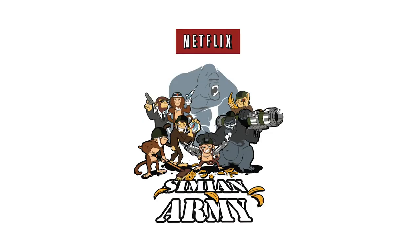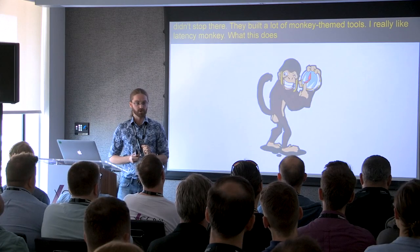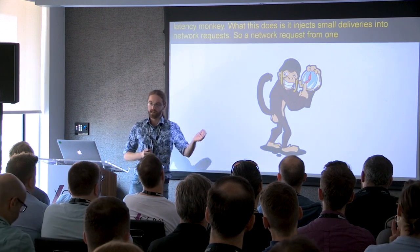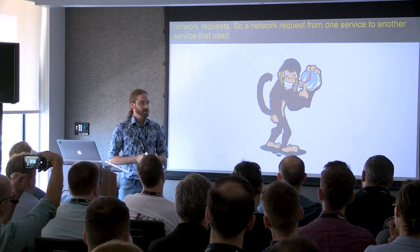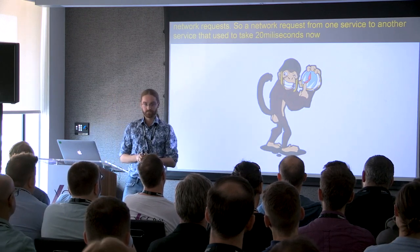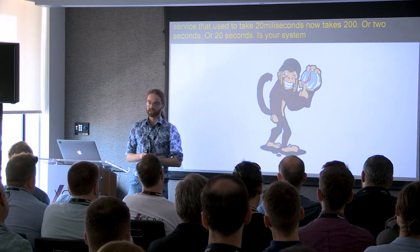They didn't stop there. They actually built many monkey-themed tools. We're not going to talk about all of them. I really like Latency Monkey. What Latency Monkey does is it injects very small delays into network requests, so a network request from one service to another that used to take 20 milliseconds now takes 200 milliseconds, or 2 seconds, or 20 seconds. Is your system resilient to those kinds of network degradations? Are your timeouts set correctly?